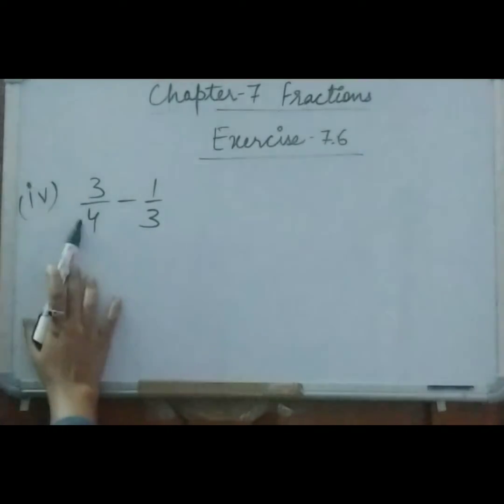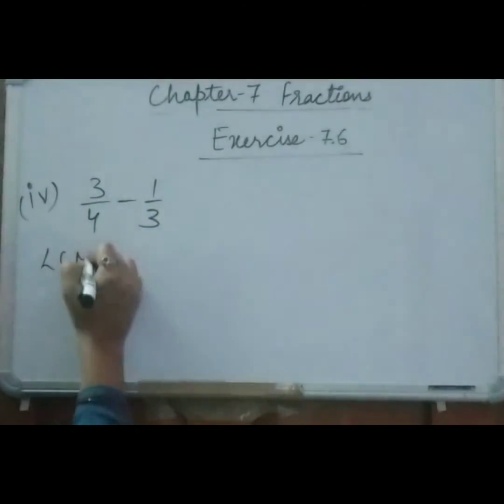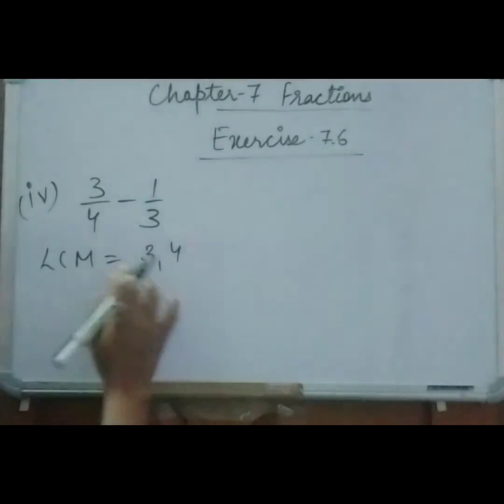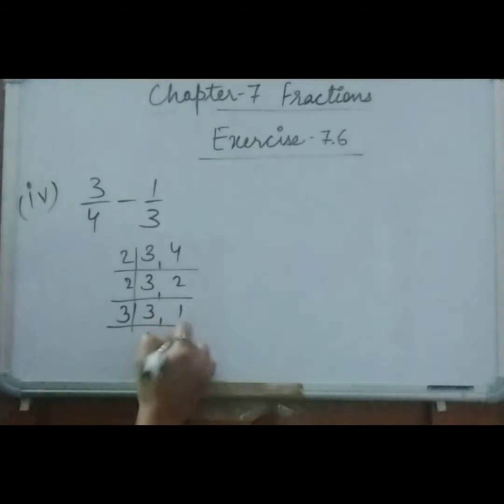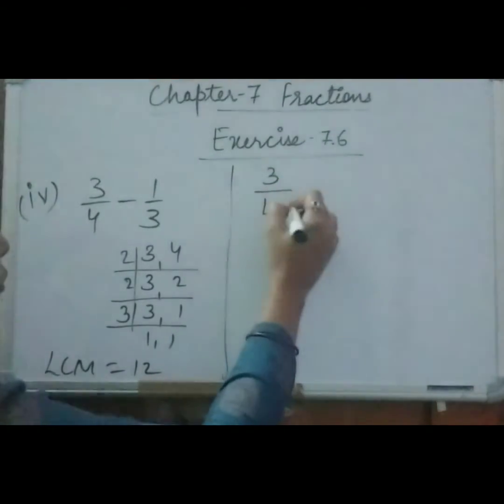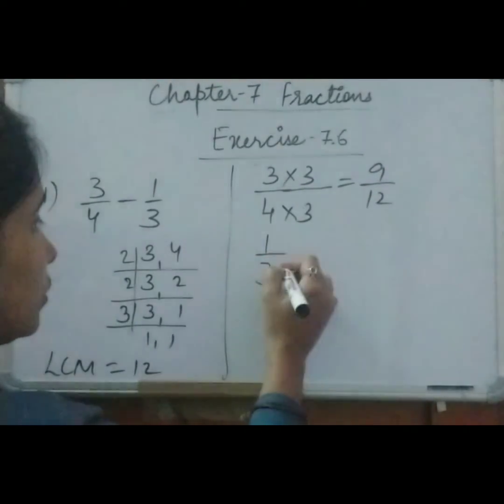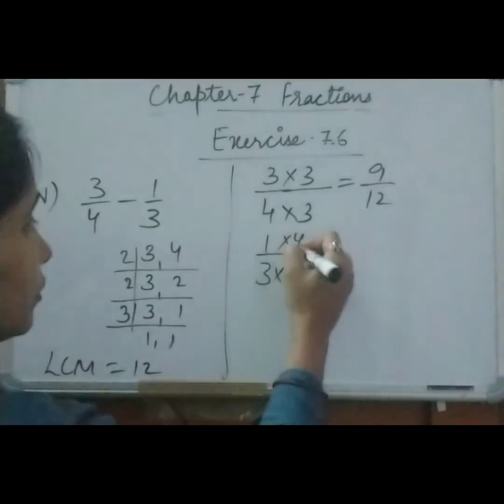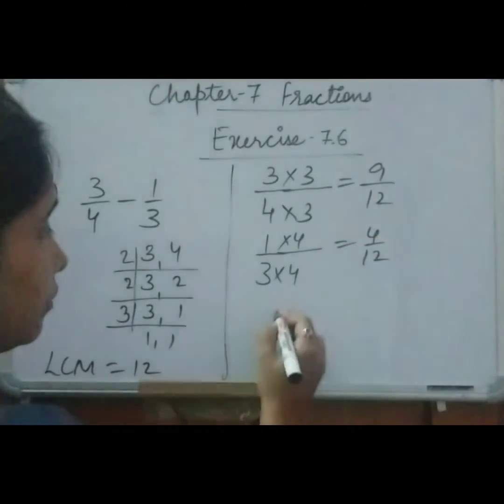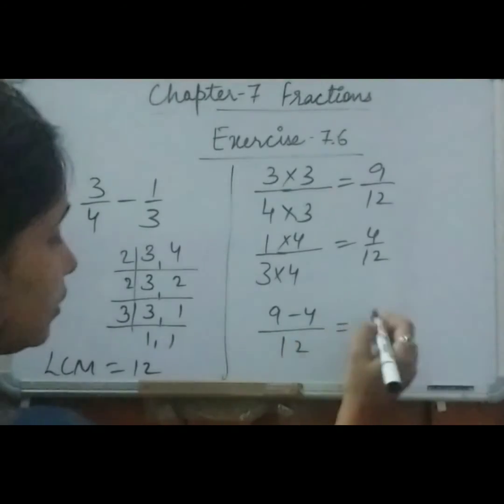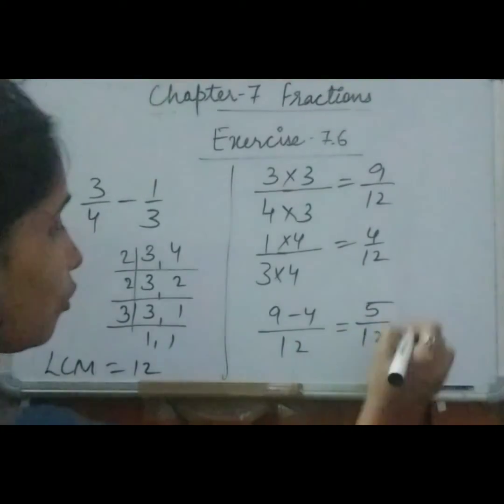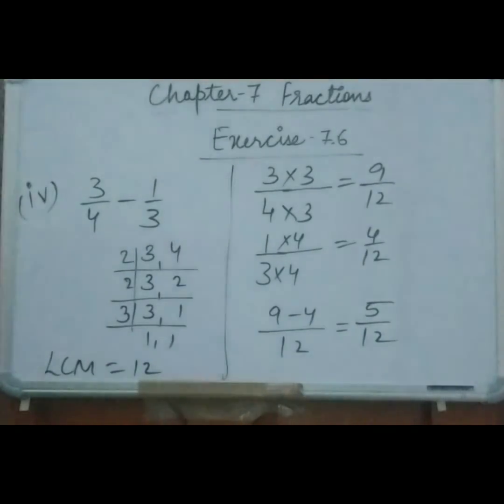Now see this one. Here it is 3 upon 4 minus 1 upon 3. So first of all we will take LCM of 3 and 4. So it is 2 times 2 is 4, 2 times 1 is 2, 3 times 1 is 3. So 4 times 3 is 12. So LCM is 12. 3 upon 4, so 4 times 3 is 12, so this one also 3, 9 upon 12. 1 upon 3, we will make it 12 by multiplying it with 4. So 4 times 1 is 4 upon 12. So 9 minus 4 upon 12. It is 5 upon 12. This is the answer.